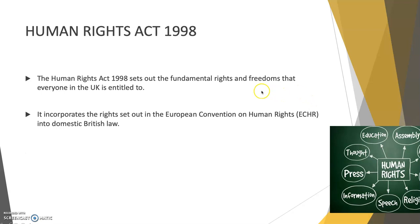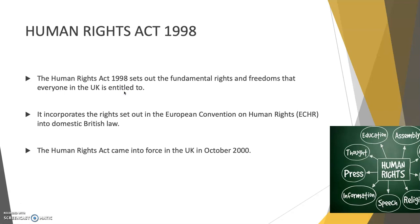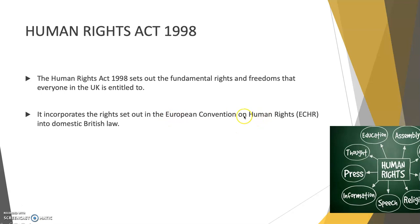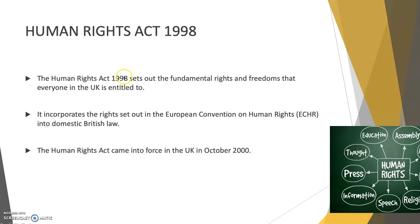In 1998 the Human Rights Act and the European Convention came together and they set out the fundamental rights and freedoms for everyone in the UK. For the simple fact that you are human and you live in the UK, you are entitled to these rights — they are fundamental rights and freedoms. It incorporates the rights set out in the European Convention on Human Rights, the ECHR, which was put into domestic British law. Even though it is popularly known as the Human Rights Act of 1998, it actually came into force in October 2000 in the UK.